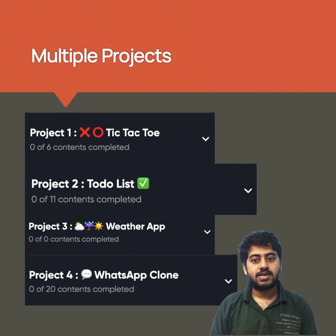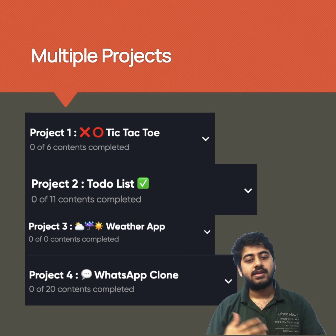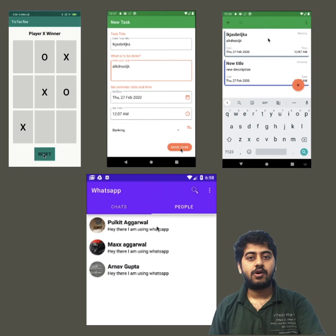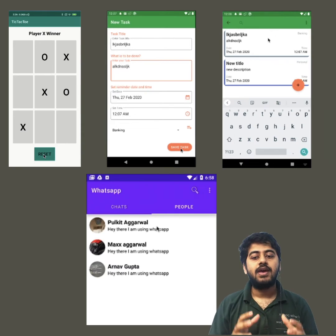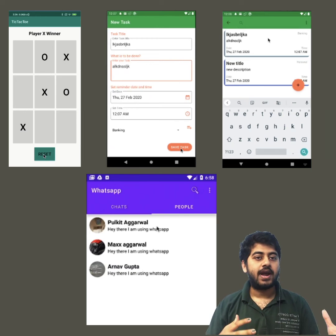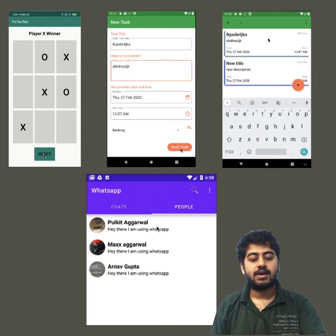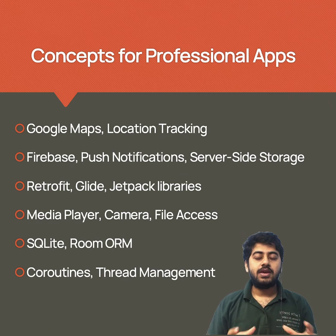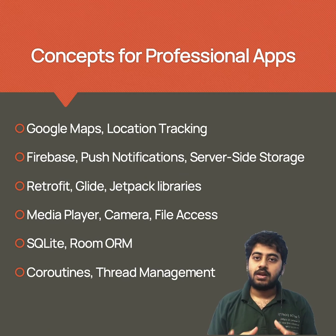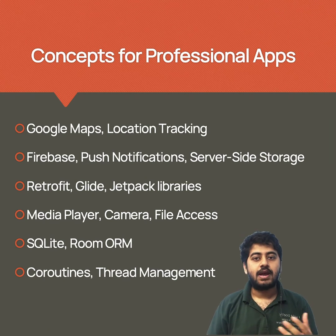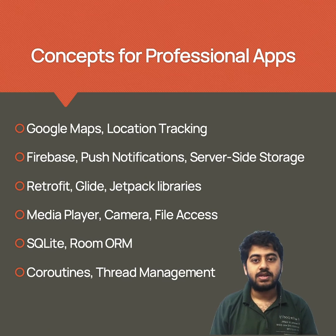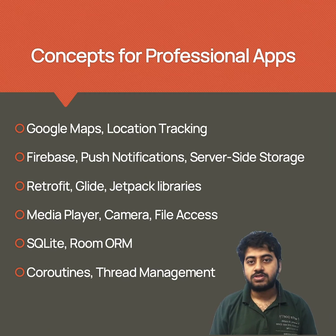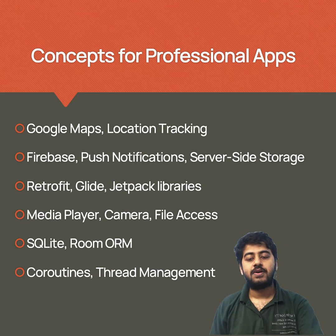This course contains multiple projects — some basic beginner projects like Tic-Tac-Toe and a to-do list app, and then professional grade projects like a weather prediction app and a complete WhatsApp clone with user management and messaging. All the concepts needed to develop professional apps are covered: third-party libraries like Retrofit and Glide, Google Maps, location tracking, push notifications, database storage, coroutines, thread management, and background services.